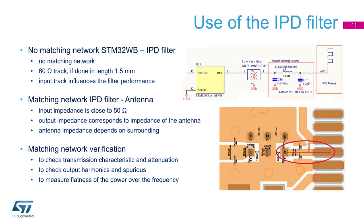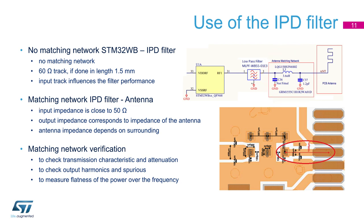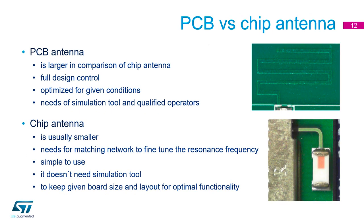Much simpler is the IPD implementation. There is no matching network between the output of the chip and the IPD filter. Only the length and impedance of the track must be maintained. The matching network is inside the IPD and this input track is part of the matching network. Output impedance measurement is recommended. The design of the matching network between the IPD filter and the antenna has to respect the impedance of the filter and the impedance of the antenna. The antenna should be measured in operational conditions. If the input line is designed well, the output is close to 50 Ohm, making it much more straightforward to propose a matching network. It is highly recommended to check not only the transmission characteristic of the pass band but also the rejection performance of the filter.